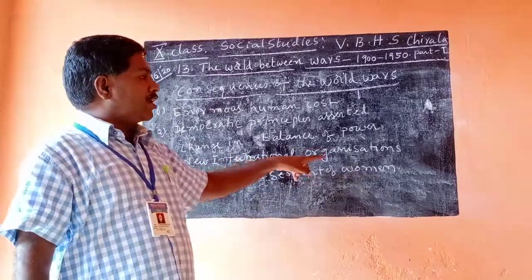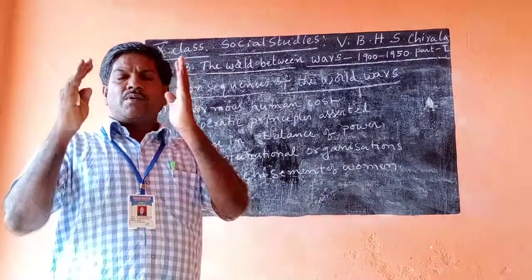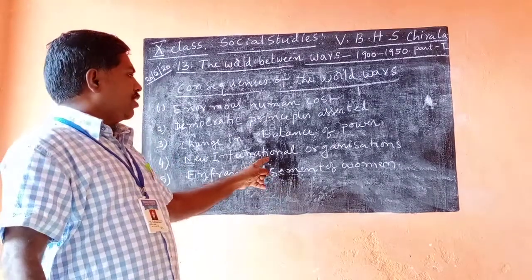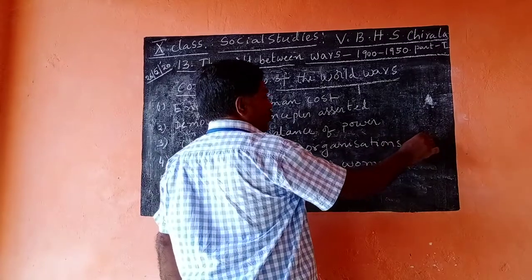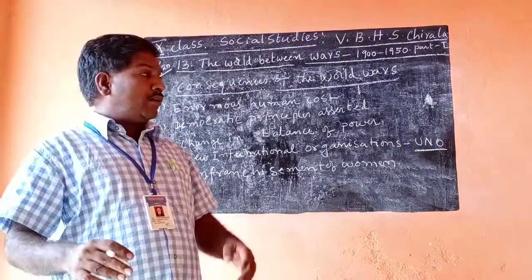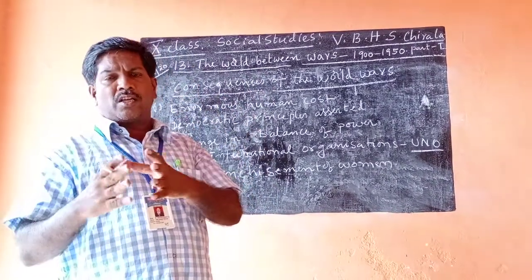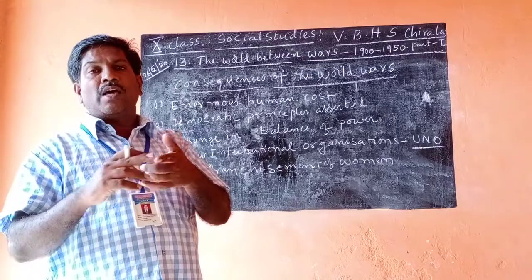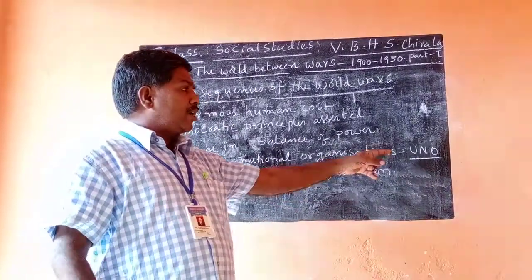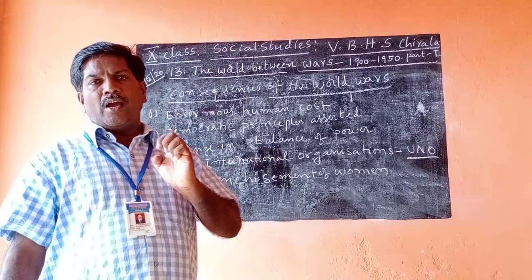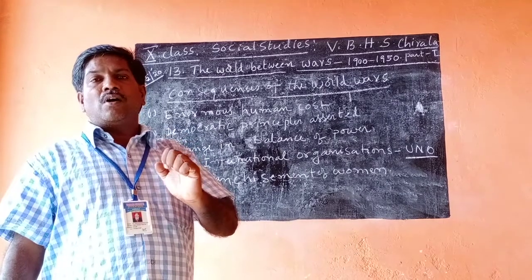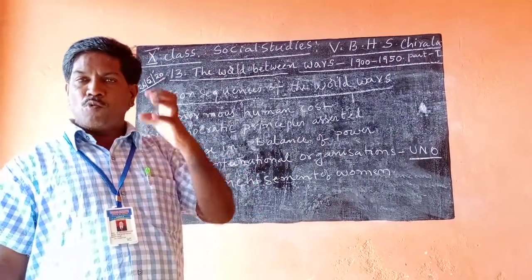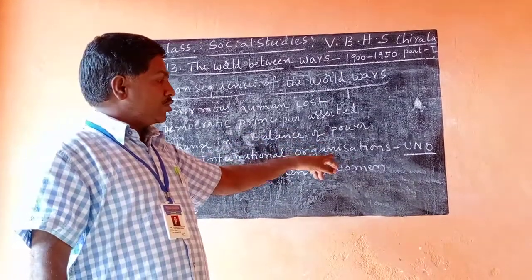The fourth consequence: new international organizations. After the end of the First World War, the League of Nations was established. After the Second World War in 1945, the United Nations Organization — UNO — was established. UNO has nearly six organs and sub-organs and specialized agencies. For example, UNESCO, UNICEF, WHO, and ILO — a number of institutions established under the control of UNO. These institutions are working with the main aim of progress for all world citizens, giving good status and economic support to poor nations.